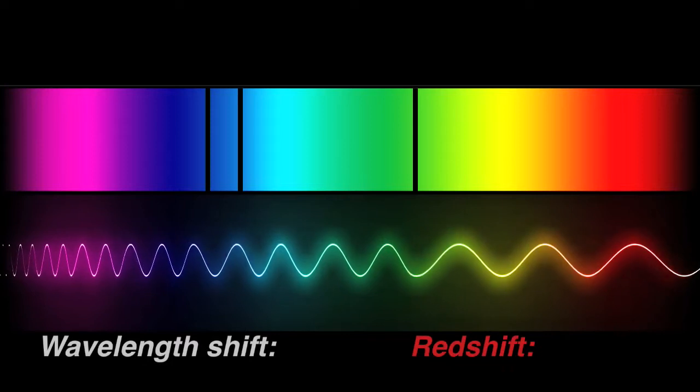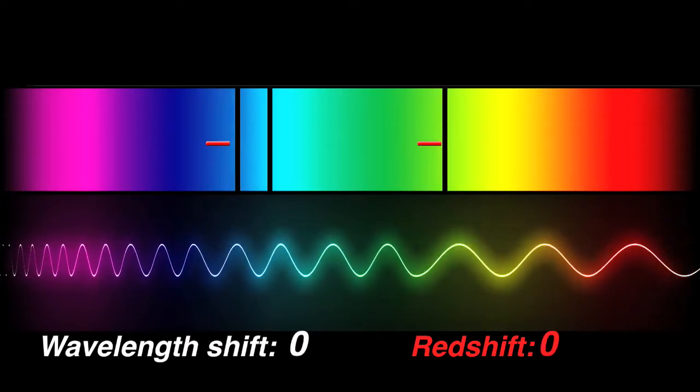If signature absorption and emission lines of a galaxy's spectrum have shifted to wavelengths that are twice as long, the galaxy has a redshift of one.